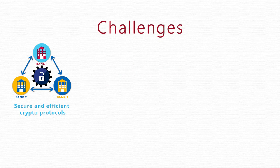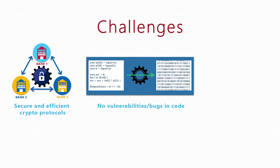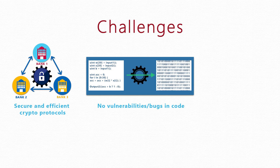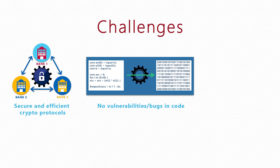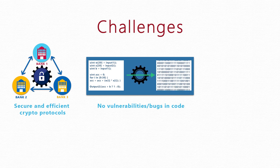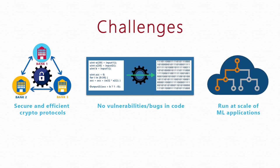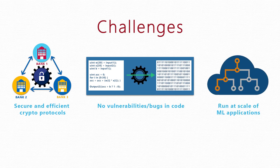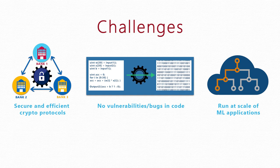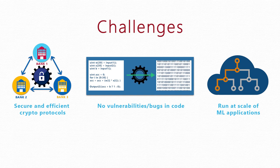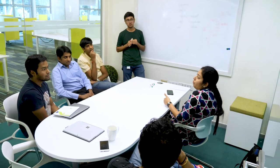There are many challenges to solve this problem. First, we must construct secure and efficient cryptographic protocols. Next, we must ensure that our compiler did not introduce any vulnerabilities or bugs into the code. Finally, all of this must run at the scale of ML applications. These are some of the problems that Easy Peasy aims to tackle. The project is a deeply collaborative effort between researchers working in cryptography, programming languages, machine learning, as well as security.